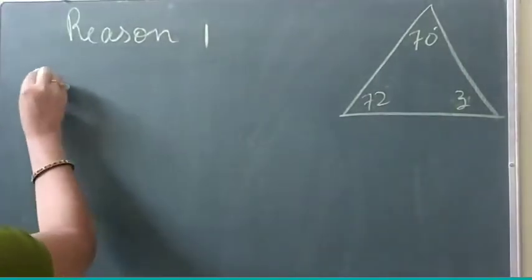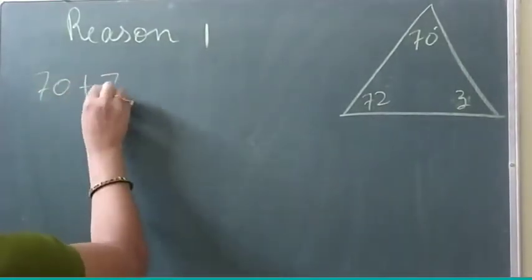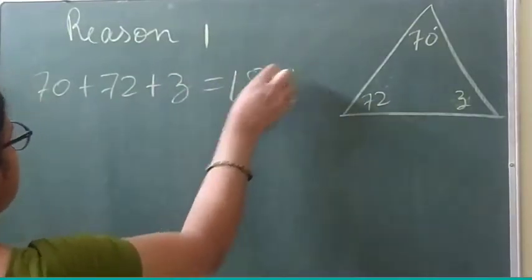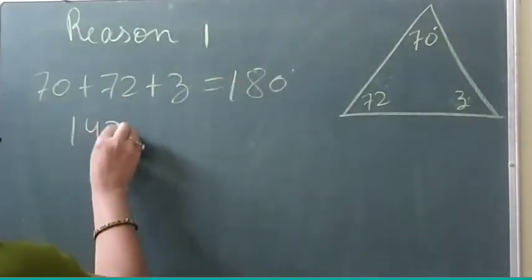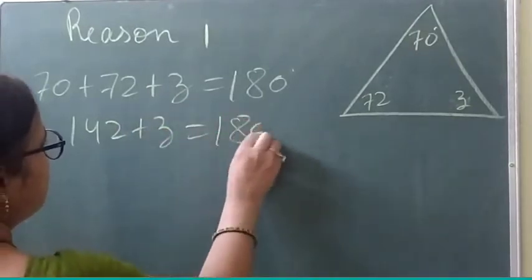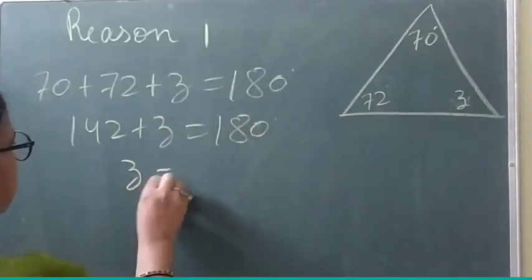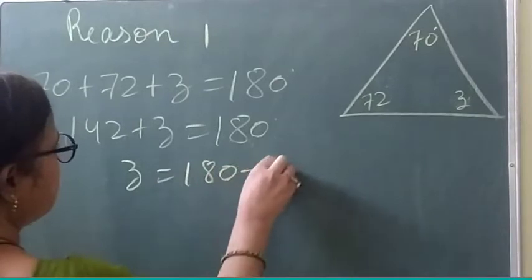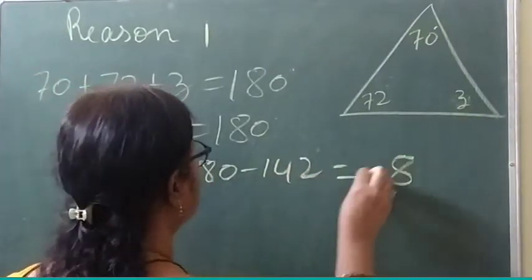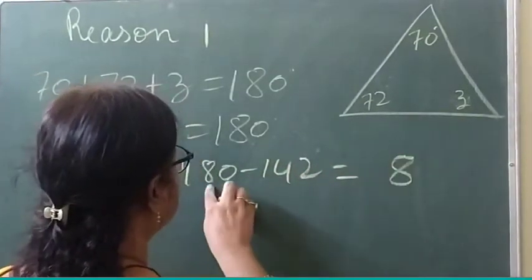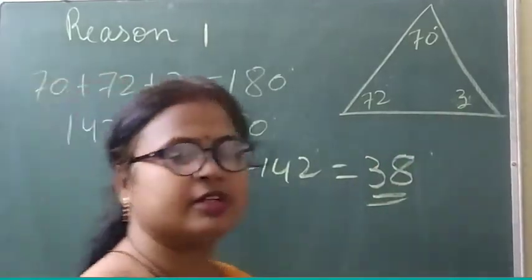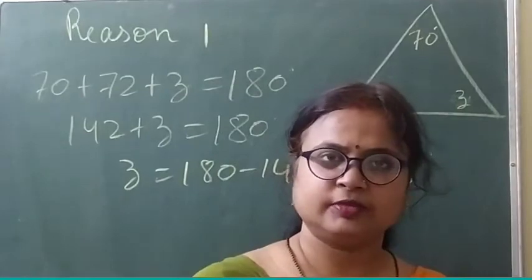So you will write: 70 plus 72 plus Z is equal to 180. So 142 plus Z is equal to 180, and so Z will be equal to 180 minus 142, which is equal to 38 degrees. So the answer is 38 degrees.